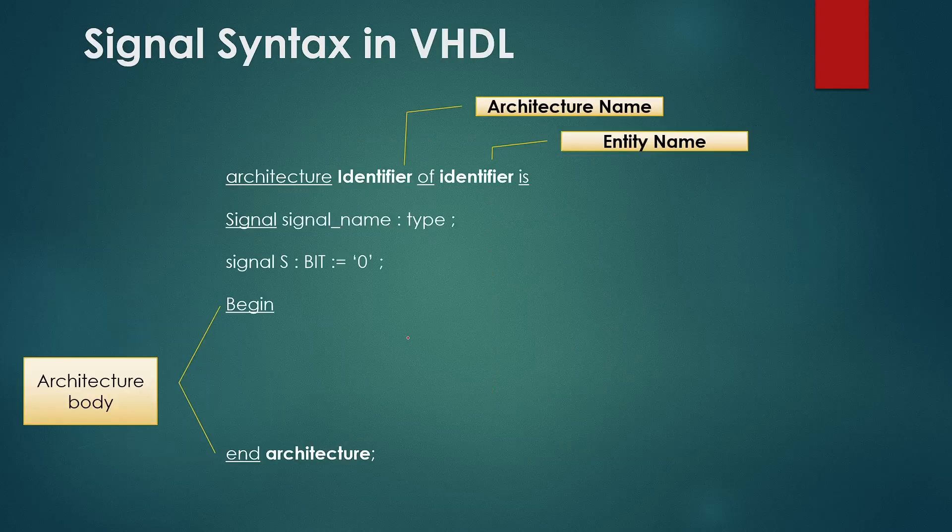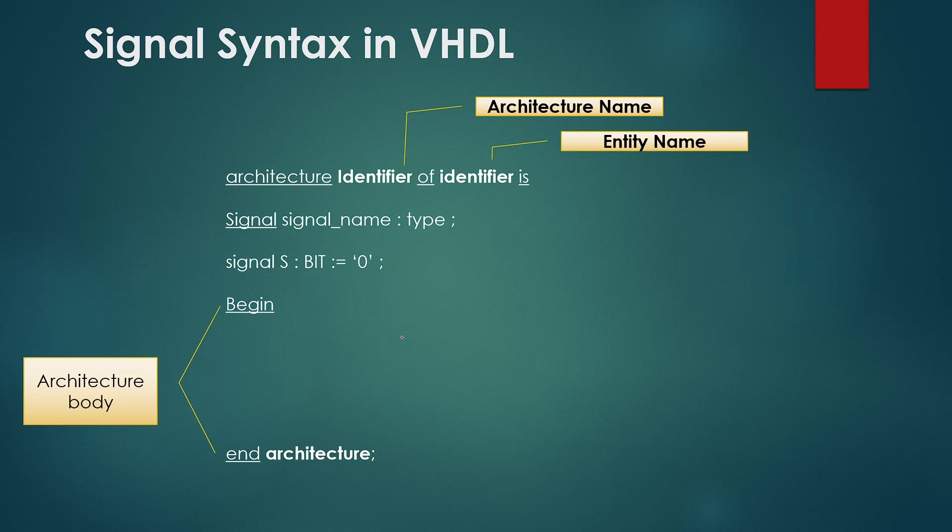Let's quickly see the syntax in VHDL for signal. So we declare signal between the architecture statement and the begin statement. To declare a signal write signal followed by the signal name then press colon and write the signal type and in the last press semicolon.